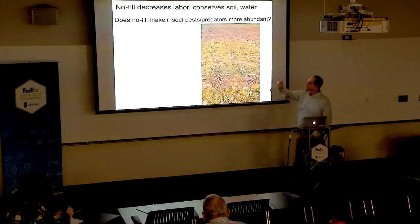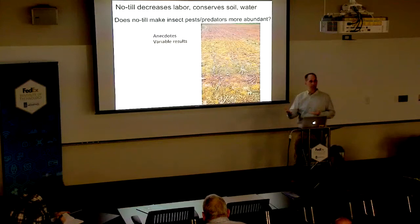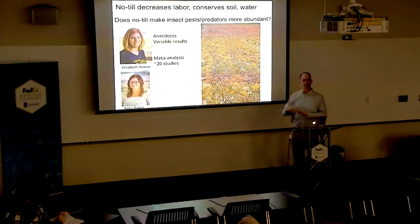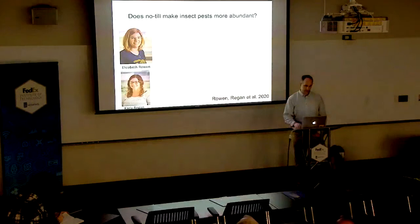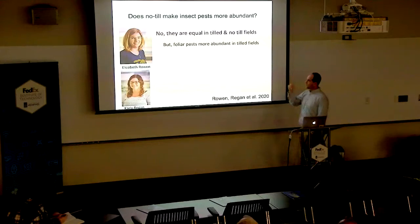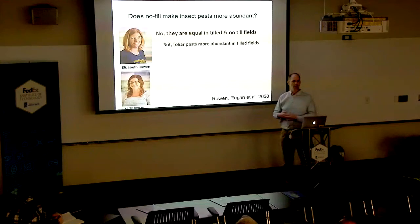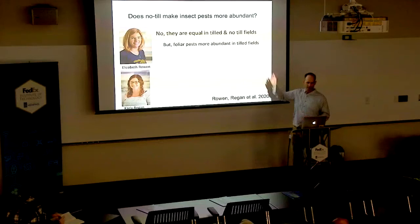One of my graduate students, Elizabeth Rowan, simply asked: does no-till make insects — pests and predators — more abundant? If you look in the literature there are a couple of papers here and there with variable results, and if you talk to farmers there are anecdotes. Elizabeth took advantage of her good quantitative skills and did a meta-analysis with her friend Carly Regan, and it just came out in January. The quick answers: no-till does not make pest populations worse. In fact, pests are about equivalent in no-till and tilled fields. Notably, foliar pests are more abundant in the more disturbed settings — where you're tilling more, you actually get more pests in the leaves of plants.